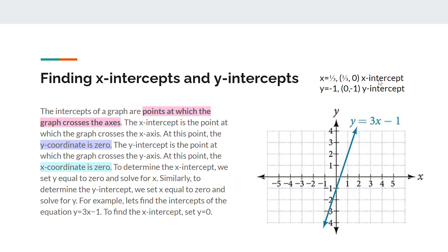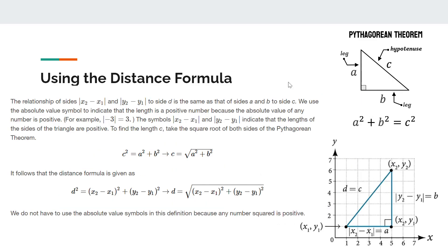The next part is using the distance formula. Something important to remember is that the distance formula is based on the Pythagorean theorem, which states that for a right triangle, the first leg squared plus the second leg squared equals the hypotenuse squared. Taking the square root of both sides gives c = √(a² + b²).